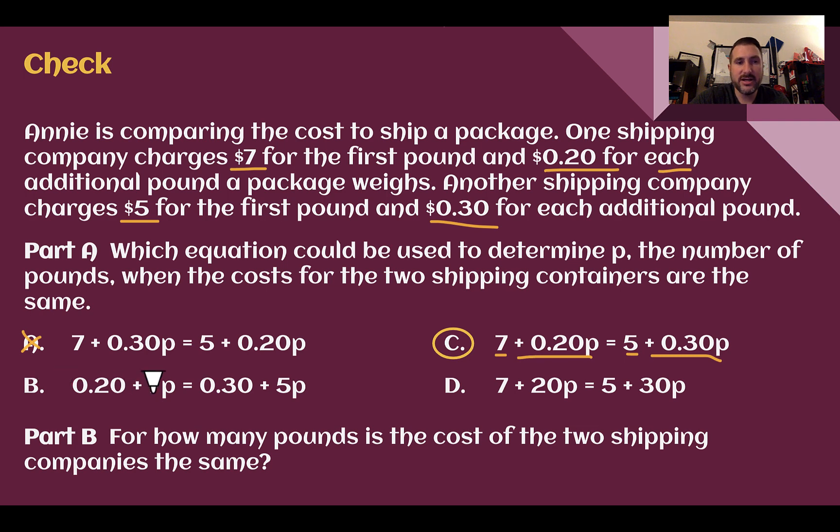For B, it has the correct values, but it has the wrong values with the variable. It's not 20 cents one time where it should be $7 one time. 20 cents should be every pound after that. So B has the variables backwards and then D is close, but we're talking about 20 cents, not 20 dollars.